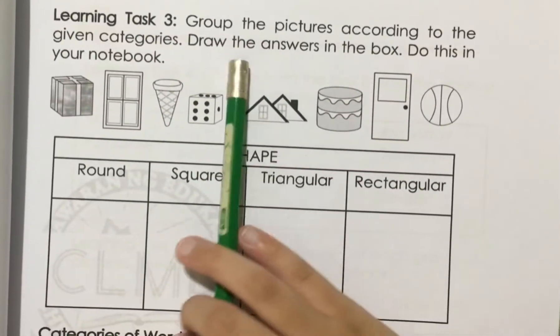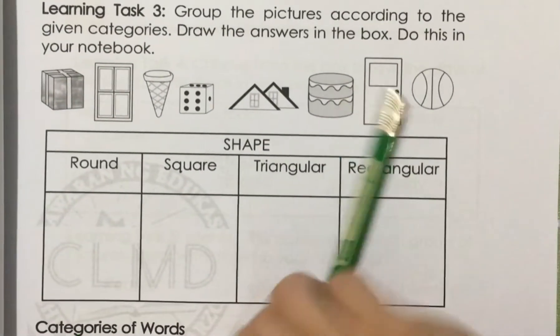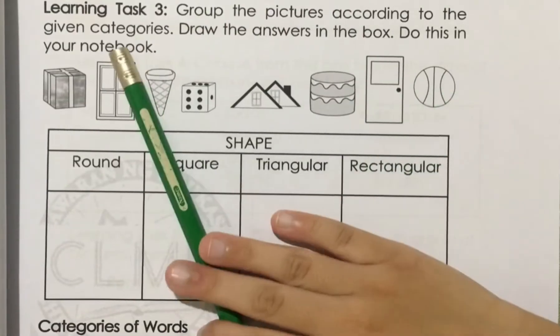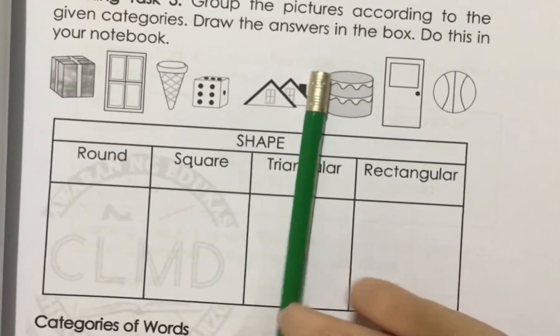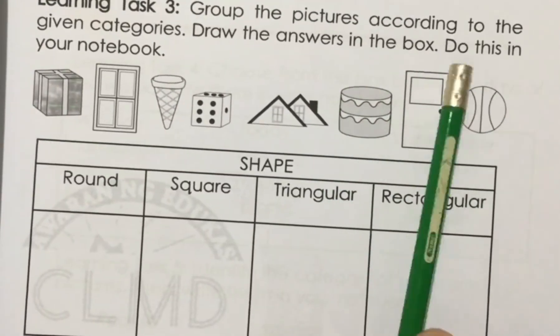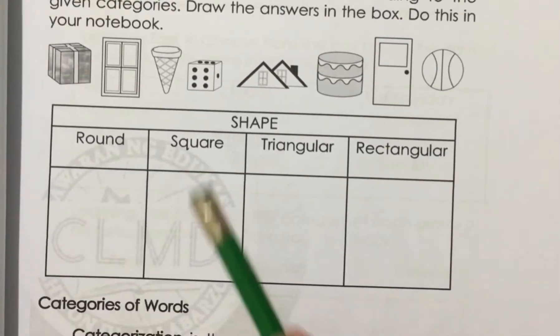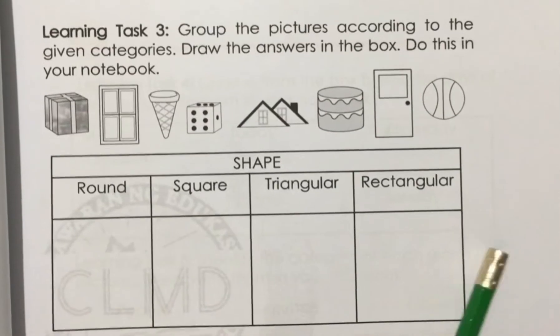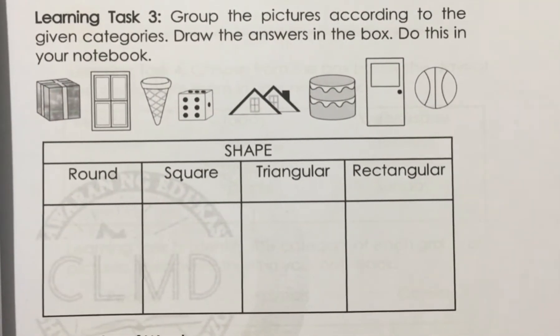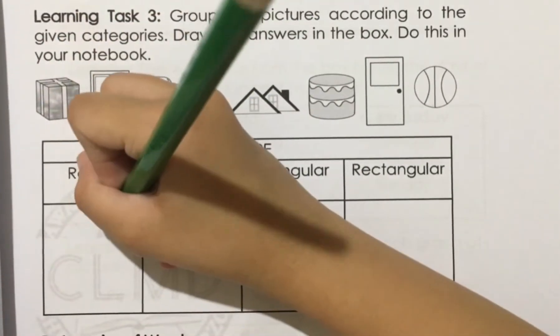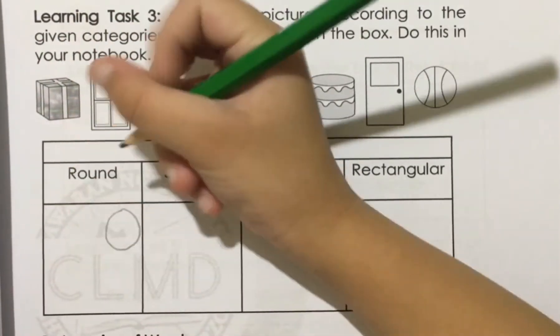Learning task 3: Group the pictures according to the given categories. Draw the answers in the box. Do this in your notebook. Round, square, triangle, rectangle. Round ball, this can spin, so I did simple ball.